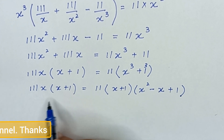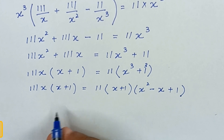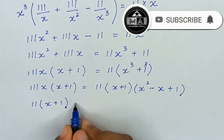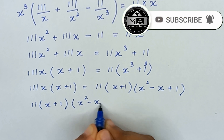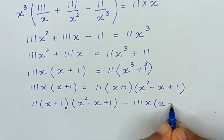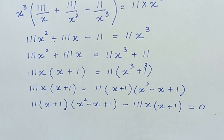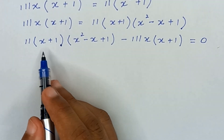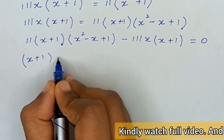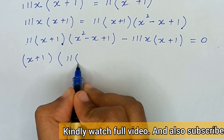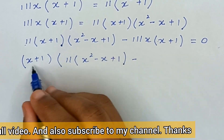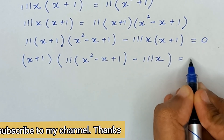Now we take the left-hand side to the right-hand side, so it becomes negative. We can write it as 11(x + 1)(x² − x + 1) minus 11x(x + 1) equals 0. From these two terms, (x + 1) is common, so factoring it out: (x + 1) times [11(x² − x + 1) − 11x] equals 0.